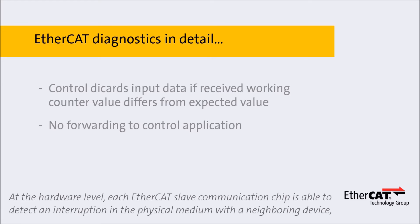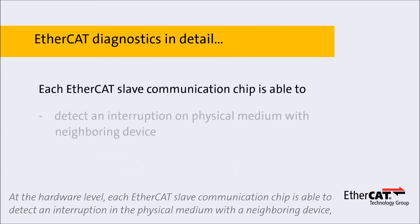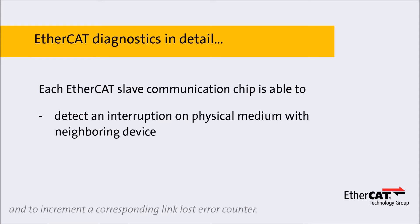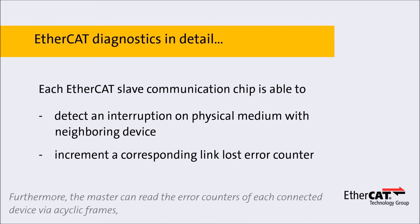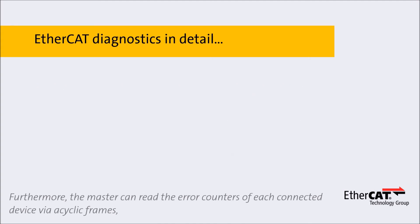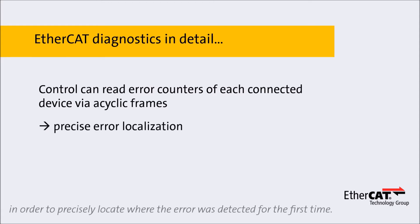At the hardware level, each EtherCAT slave communication chip is able to detect an interruption in the physical medium with a neighboring device and to increment a corresponding link lost error counter. Furthermore, the master can read the error counters of each connected device via acyclic frames in order to precisely locate where the error was detected for the first time.